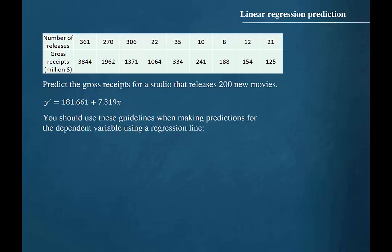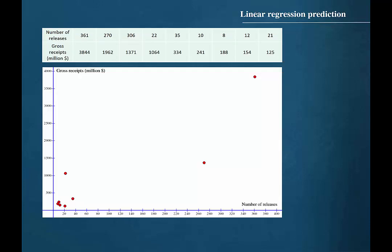You should use these guidelines when making predictions for the dependent variable using a regression line. One, the points of the scatter plot fit the regression line reasonably well. So we will begin by constructing a scatter plot for the ordered pairs for the correlated data.